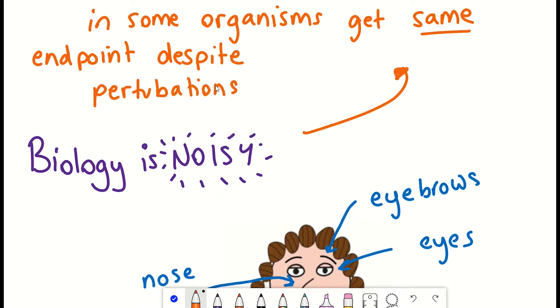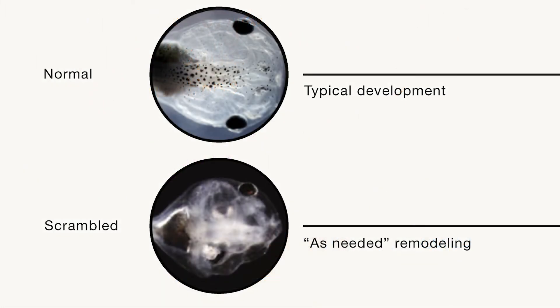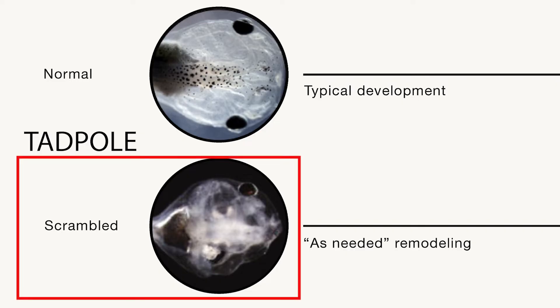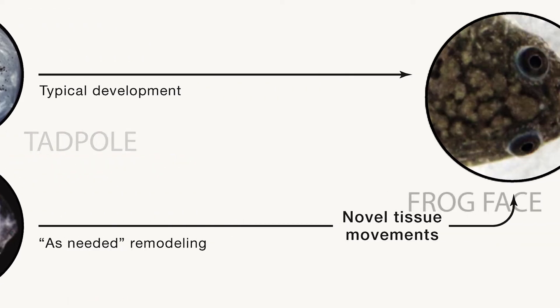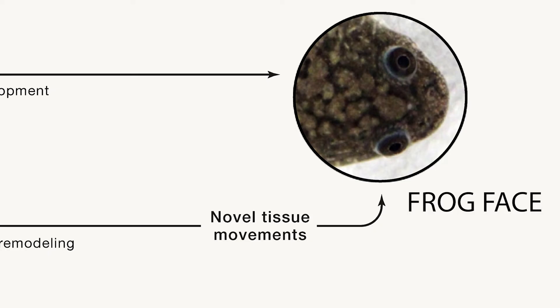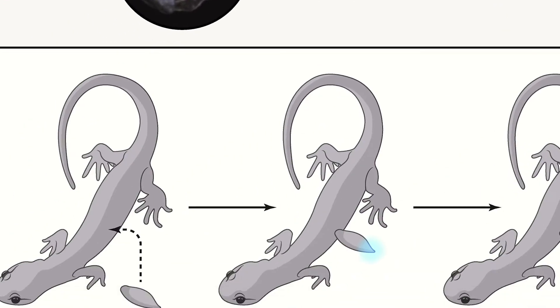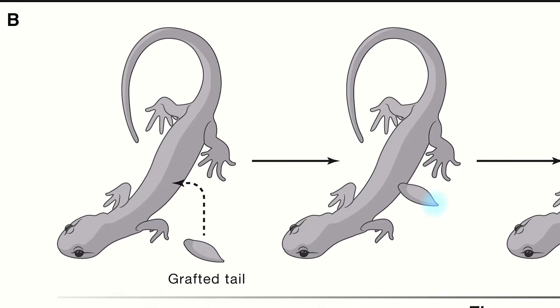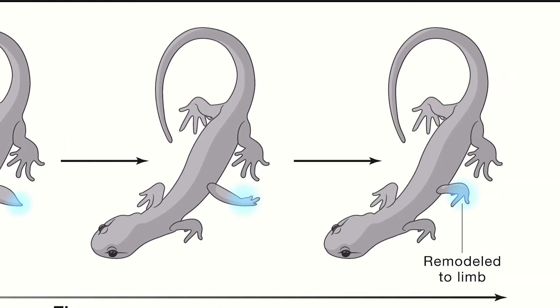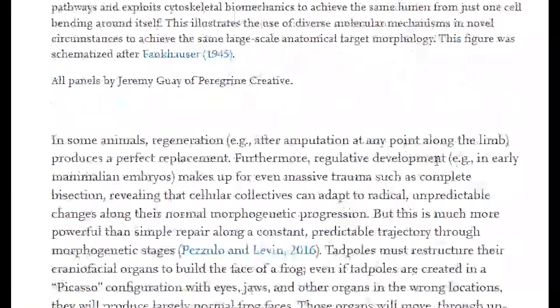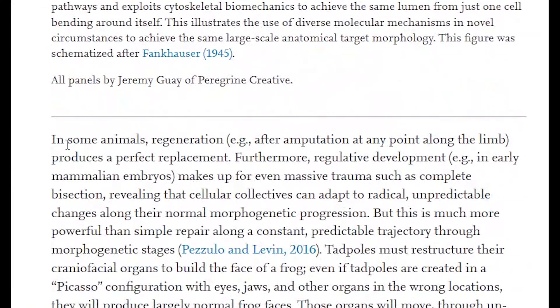As you can see here, in this experiment performed in frogs, you can take a tadpole and make its face abnormal, and then rearrangement will occur such that a normal frog face is still built. And there's also experiments done in salamanders, whereby if you take the tail and graft it to the side of the salamander, it will remodel into a limb. And in some animals, if you amputate them, they can still produce a perfect replacement, which is madness.